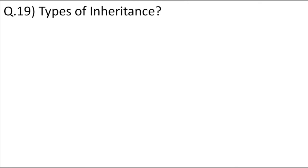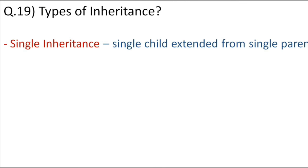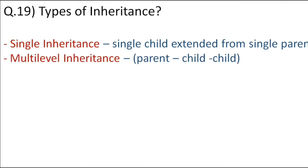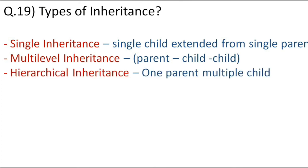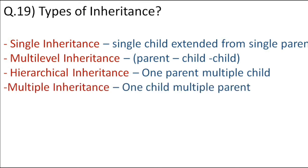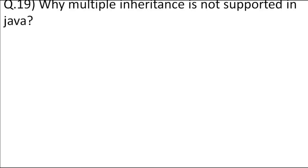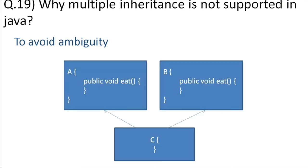What are the types of inheritance? We have single inheritance — one parent class and one child class extending from it. Multilevel inheritance — one parent, a child, and that child is also a parent to another child class, creating a grandparent-type relationship. Hierarchical inheritance — one parent and multiple children extending from that parent. Multiple inheritance — one child extending multiple parents — but multiple inheritance is not supported in Java to avoid ambiguity. If two parents have the same method, the compiler would be confused about which to call.